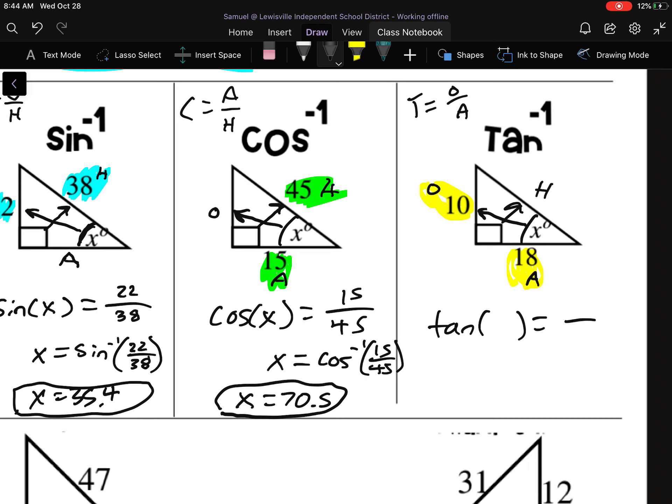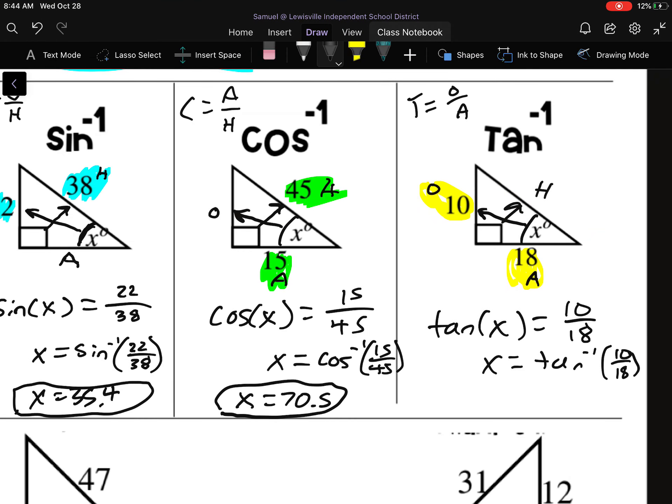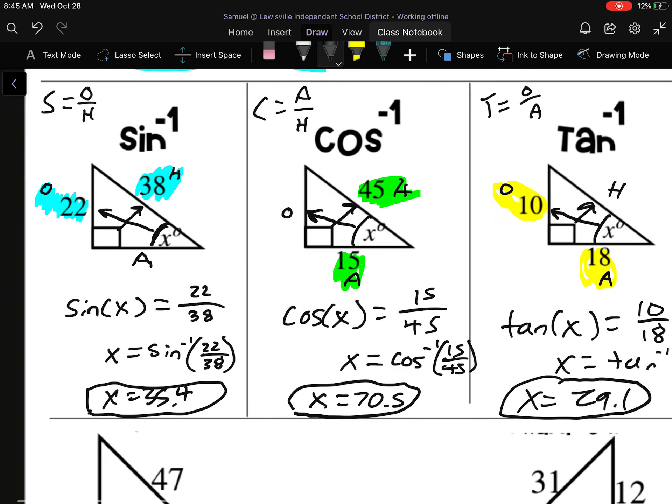So let's write it out. Inside the parentheses goes our X. Tangent is O over A. So tangent of X is equal to 10 over 18. X is trapped inside those parentheses. In order to get it out of the parentheses, we have to do inverse. Inverse tangent of 10 over 18. Inverse tangent of 10 over 18. 10 over 18, 29.05, which would be 29.1.